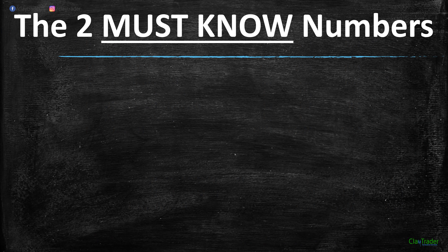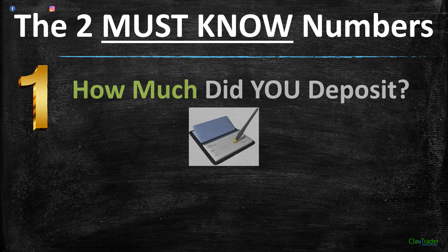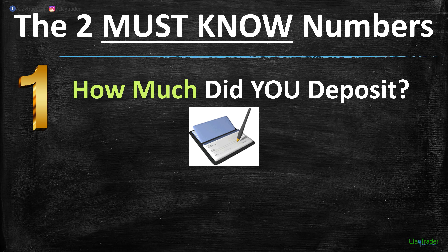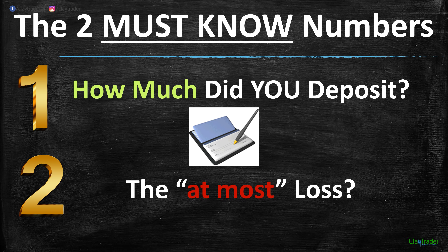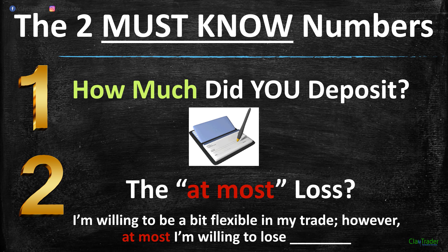Now there are two very, very important must-know numbers. Number one: how much did you deposit into your account? If you don't know that number, I'd encourage you to improve on your business management skills — because this is a business and you need to treat it seriously. Number two: what is your at-most loss? Meaning you're willing to be flexible in your trade, but at most you're willing to lose a certain amount.